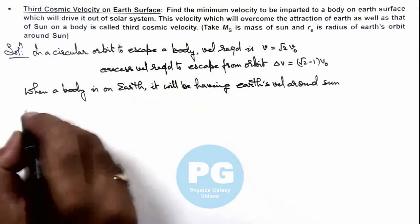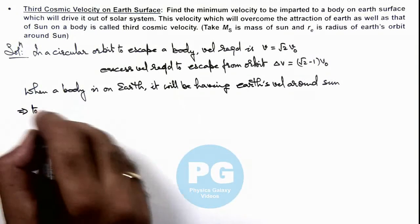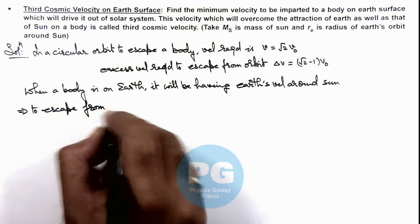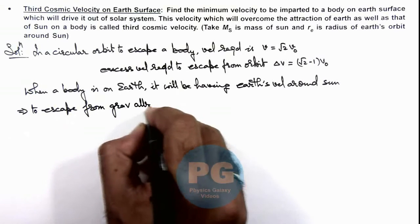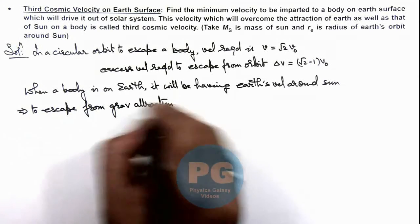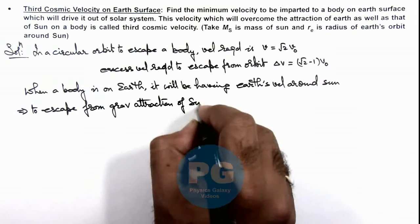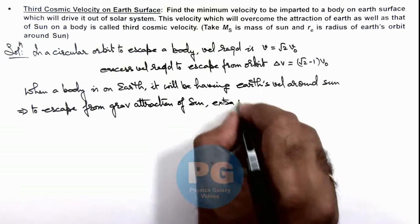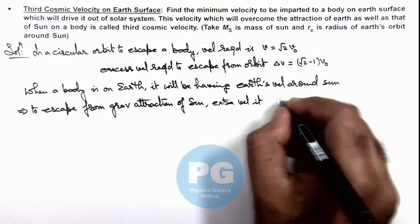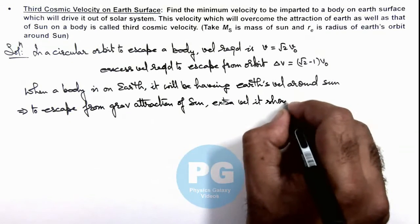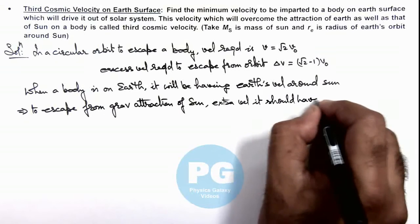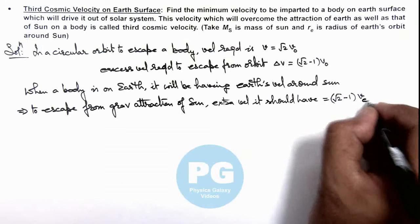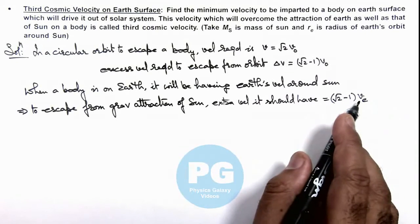This implies to escape from gravitational attraction of Sun, extra velocity it should have - this can be written as root 2 minus 1 times the orbital velocity of Earth around Sun.